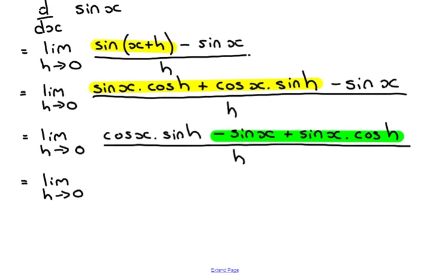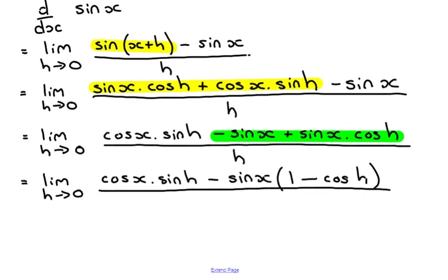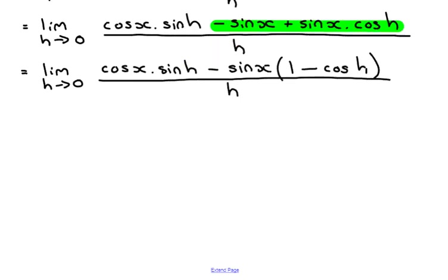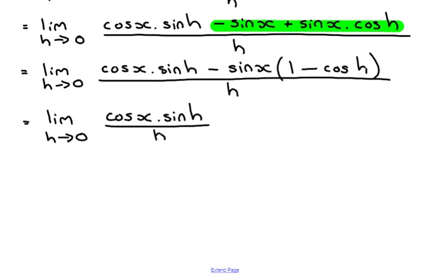Taking out that common factor, we get: cos x sine h, minus sine x times the bracket one minus cos h, all over h. We then split both terms in the numerator over the common denominator h, giving us: the limit as h tends towards zero of cos x sine h over h, minus sine x times one minus cos h over h.